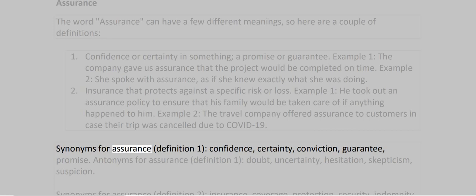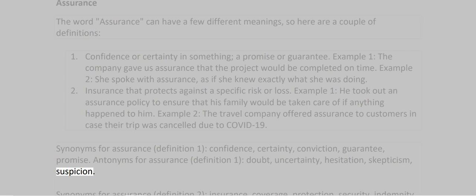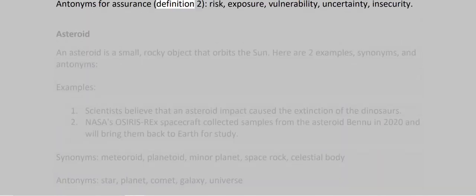Synonyms for assurance, definition 1: confidence, certainty, conviction, guarantee, promise. Antonyms for assurance, definition 1: doubt, uncertainty, hesitation, skepticism, suspicion. Synonyms for assurance, definition 2: insurance, coverage, protection, security, indemnity. Antonyms for assurance, definition 2: risk, exposure, vulnerability, uncertainty, insecurity.